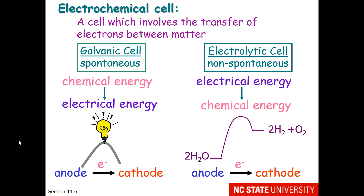In this cell, the electron flow is still from the anode to the cathode. Why would you want to make hydrogen? Well, maybe you'd like it as a very clean alternative to gasoline, and there are hydrogen-fueled cars out there now.